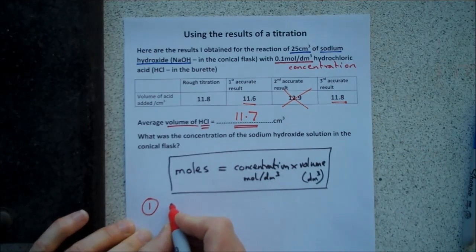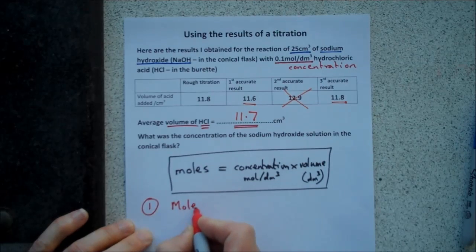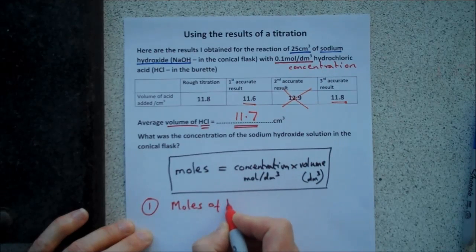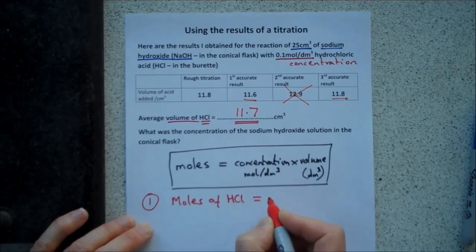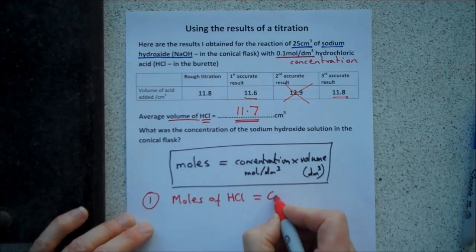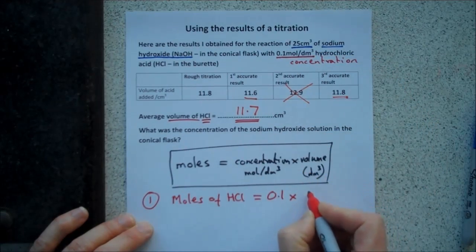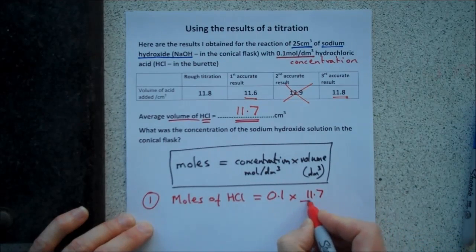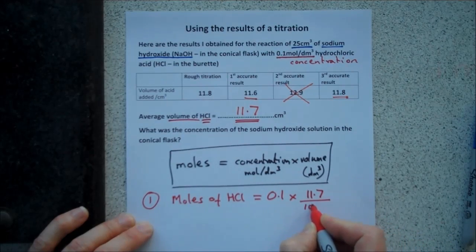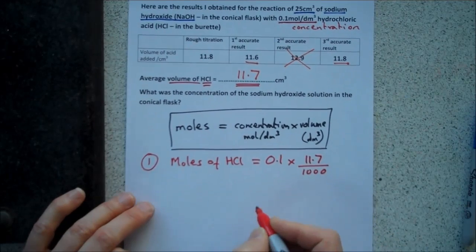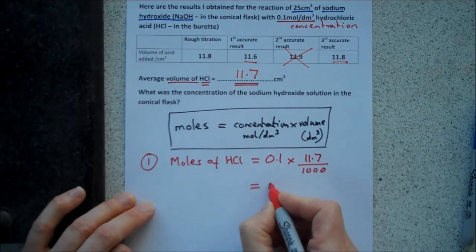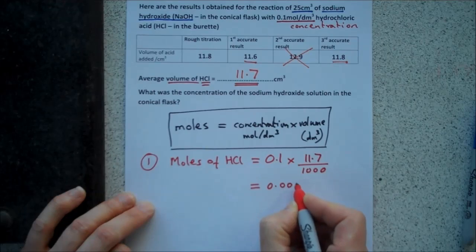So, our first important step is we can work out our moles of hydrochloric acid, HCl. They are the concentration, 0.1 times the volume, 11.7 centimetres cubed. Change that to decimetres cubed. That means you divide by 1,000. And the answer to that is 0.00117.